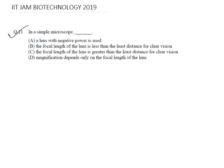In a simple microscope: (A) a lens with negative power is used, (B) the focal length of the lens is less than the least distance for clear vision, (C) the focal length of the lens is greater than the least distance for clear vision, or (D) magnification depends only on the focal length of the lens. We need to find the right answer among these four options, and since this is an MSQ-type question, only one option is correct.